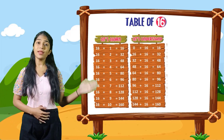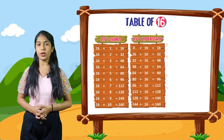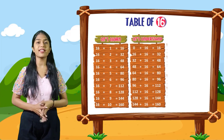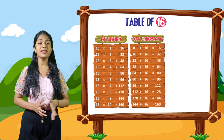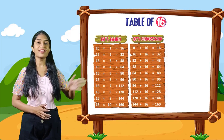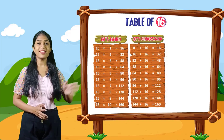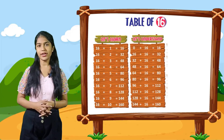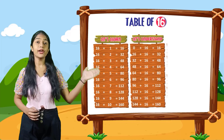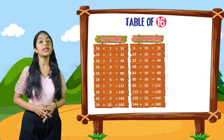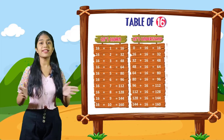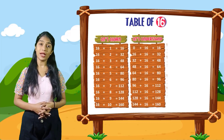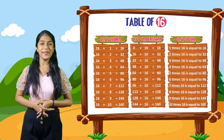Now let's understand. 0 plus 16 is equal to 16. 16 plus 16 is equal to 32. 32 plus 16 is equal to 48. 48 plus 16 is equal to 64. 64 plus 16 is equal to 80. 80 plus 16 is equal to 96. 96 plus 16 is equal to 112. 112 plus 16 is equal to 128. 128 plus 16 is equal to 144. 144 plus 16 is equal to 160.